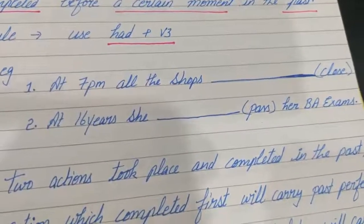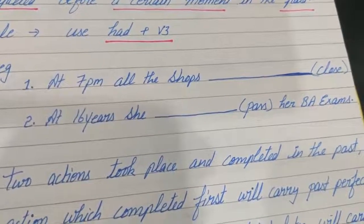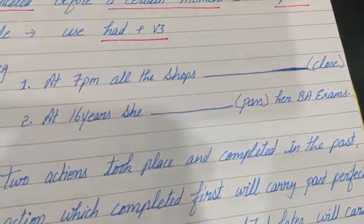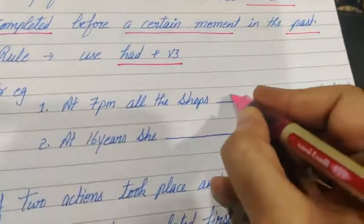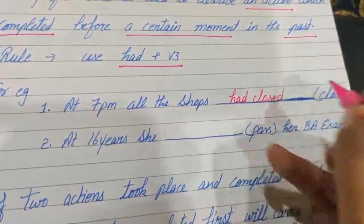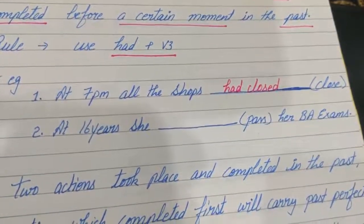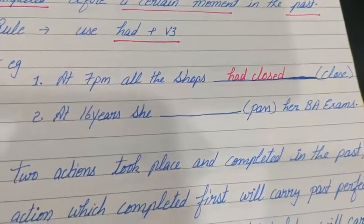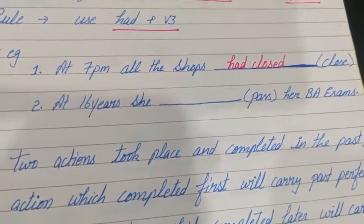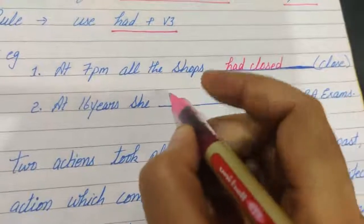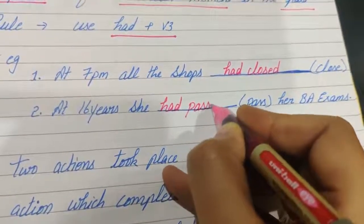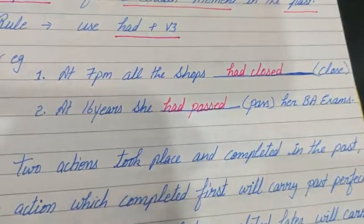At 7 p.m., in the market, all the shops had closed. Because that action was completed in the past. At 16 years she — pass her BA exams. So when she was 16 years old, she had passed her BA exams.